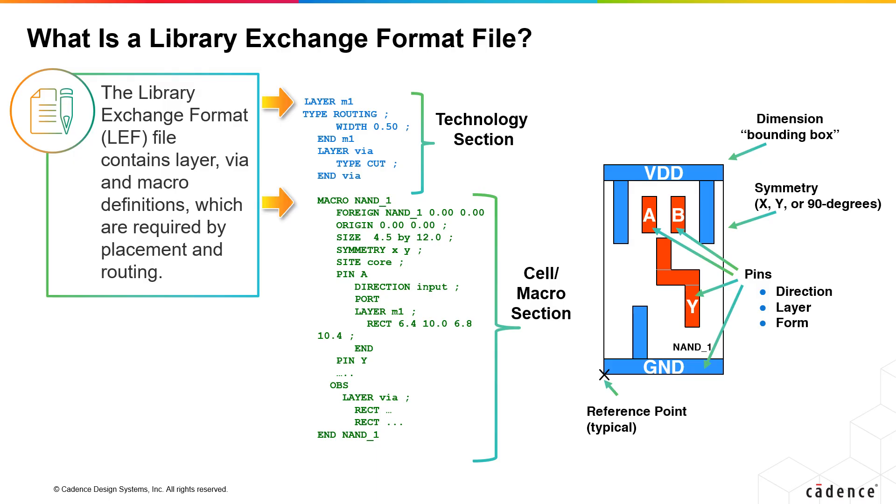The other section, and this could be a file for every cell, contains the size of a cell, the pin location of the cell, as well as the obstruction section, which is the internal routing for that cell. The obstruction tells the router the nets to avoid routing to, and the pins tell the router where the pin locations are for routing.